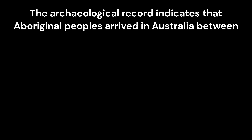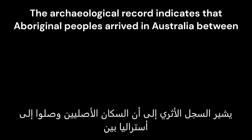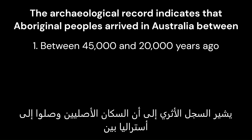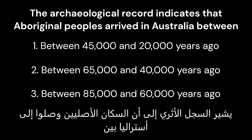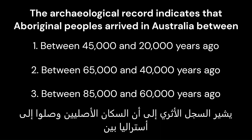Question 5: The archaeological record indicates that Aboriginal peoples arrived in Australia between... Option 1: Between 45,000 and 20,000 years ago. Option 2: Between 65,000 and 40,000 years ago. Option 3: Between 85,000 and 60,000 years ago. Correct answer is 2: Between 65,000 and 40,000 years ago.